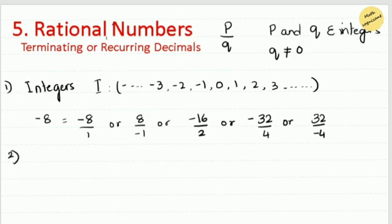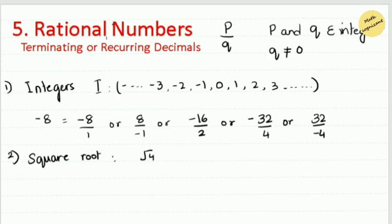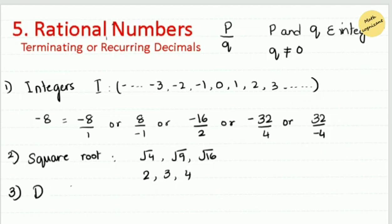The next type involves square roots. The square root of a number, when multiplied by itself, gives that number. For example, √4 = 2, √9 = 3, and √16 = 4. All these results are integers, so all of them are included in the rational numbers.